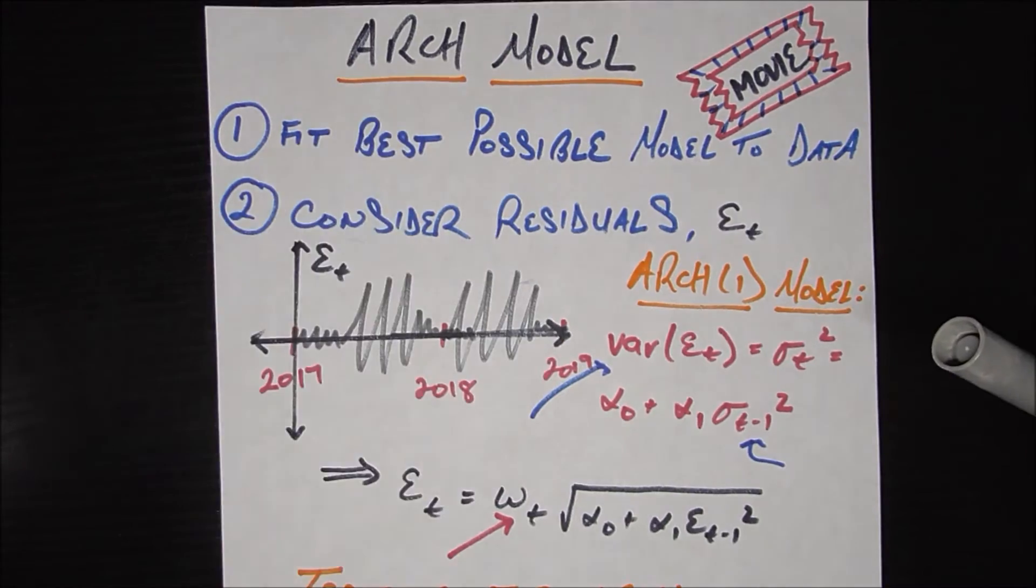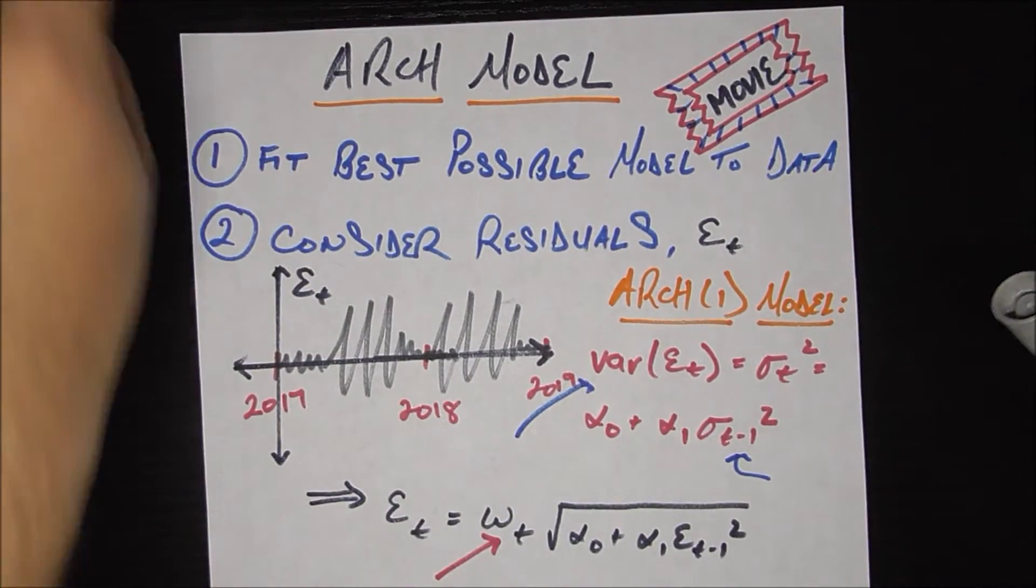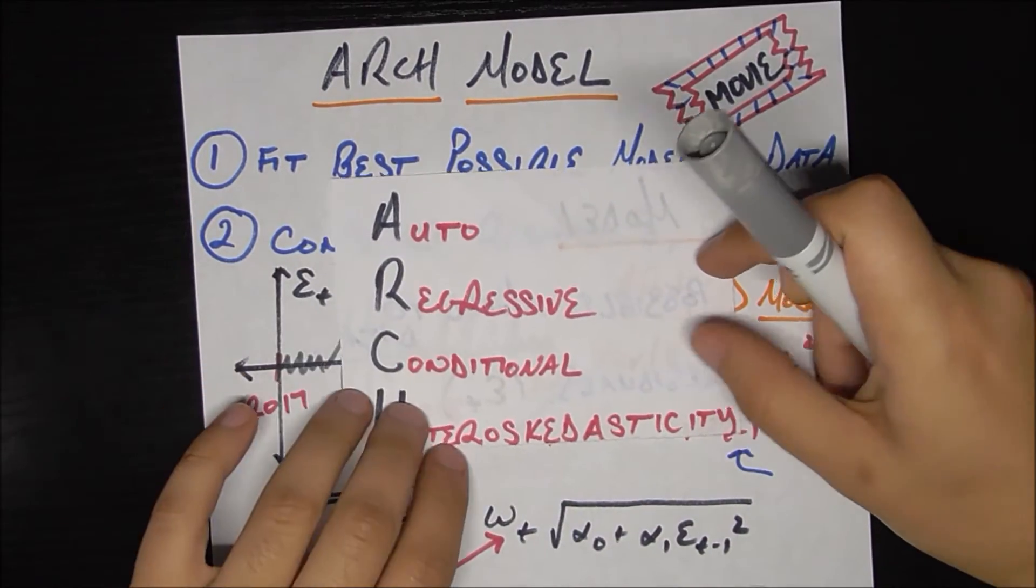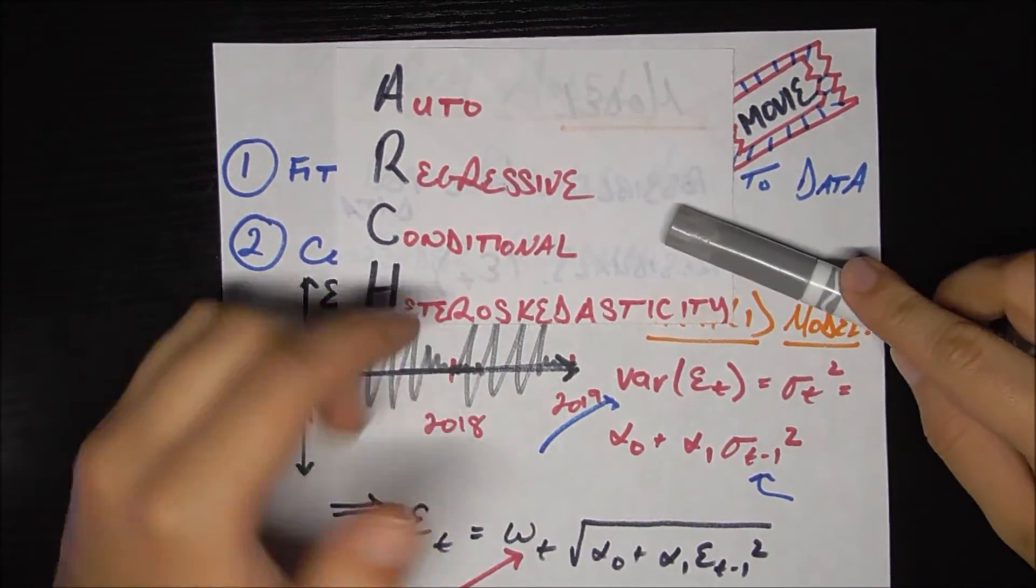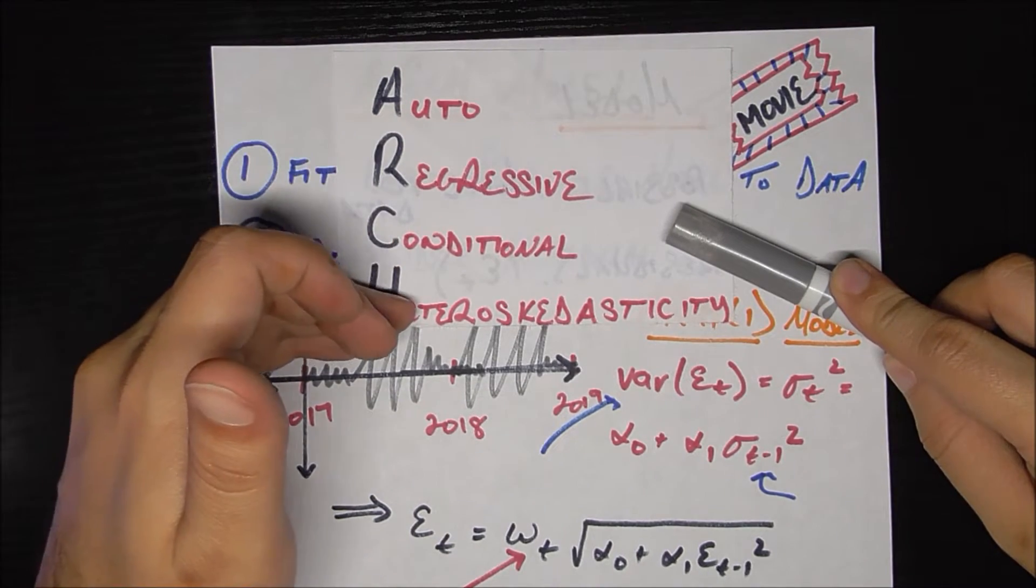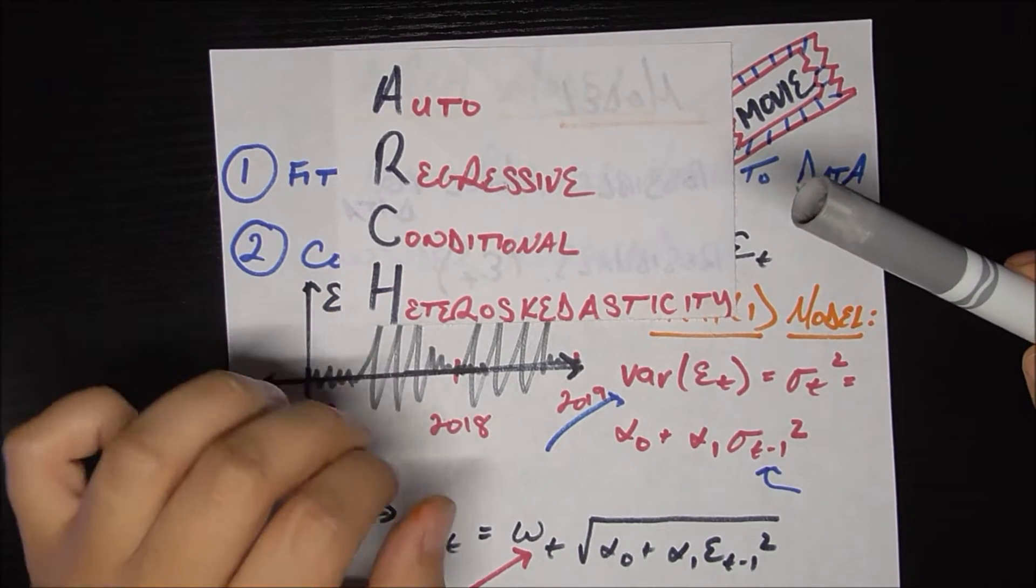I noticed after writing this entire sheet that I didn't write what ARCH stands for, so I wrote it on this little sheet of paper, and it's going to look really scary, but we're going to talk about each piece. ARCH stands for auto-regressive conditional heteroscedasticity. So that's a huge word, but we're going to tackle them one by one.